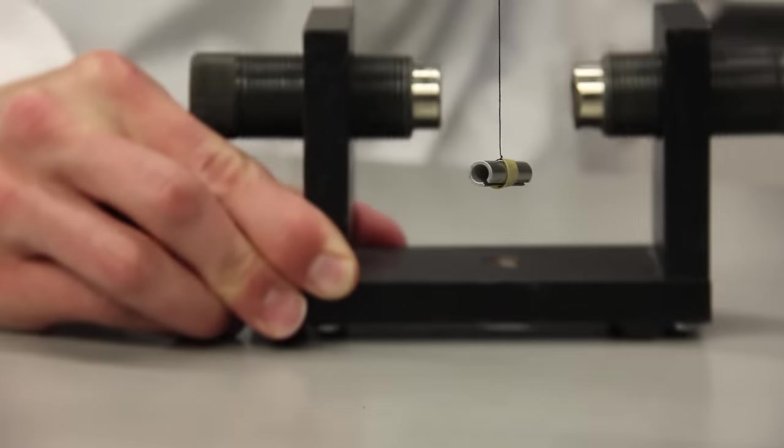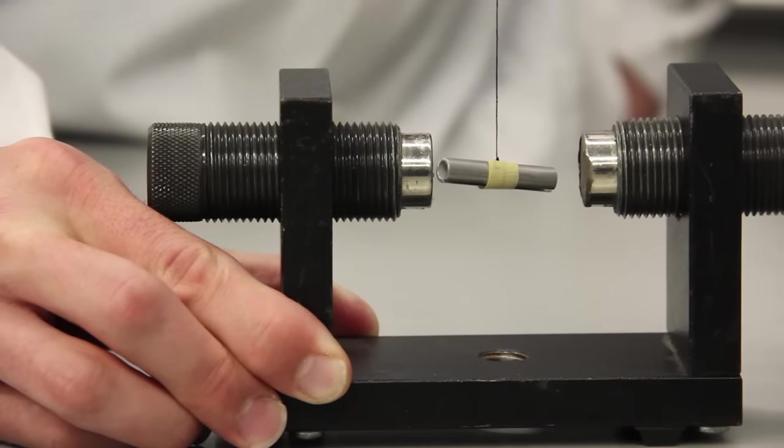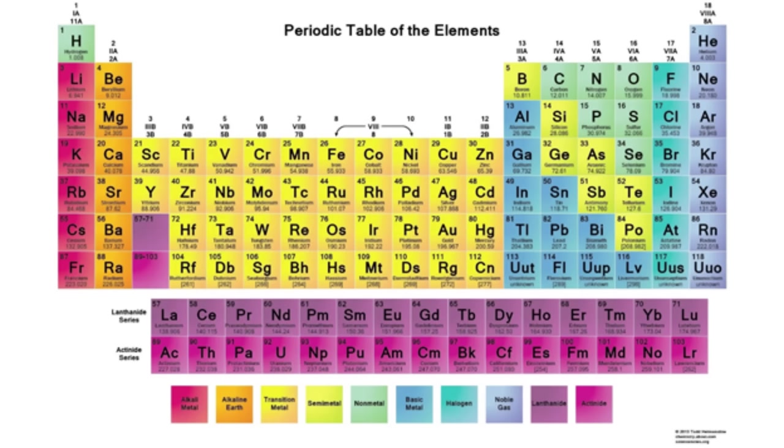But aluminum rotates into the field, typical of a paramagnet. On the periodic table, we see that aluminum has three valence electrons.